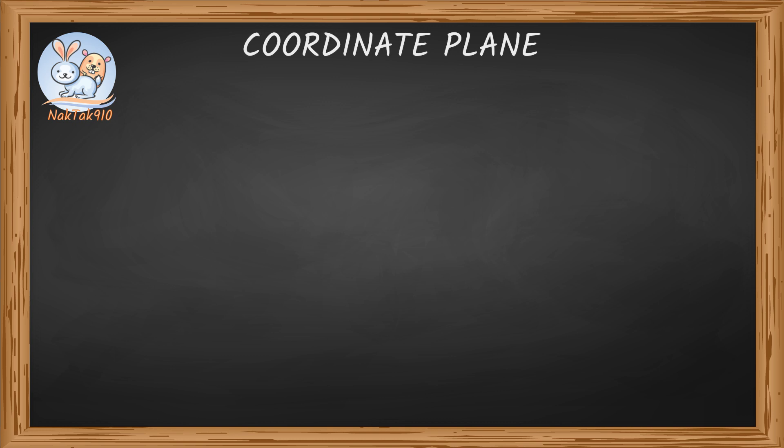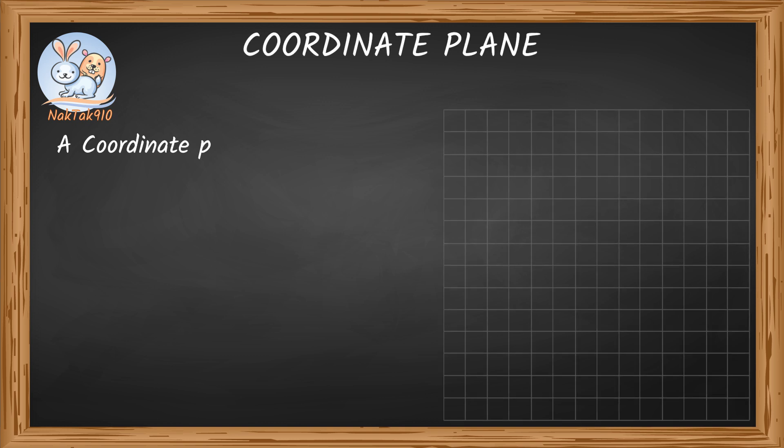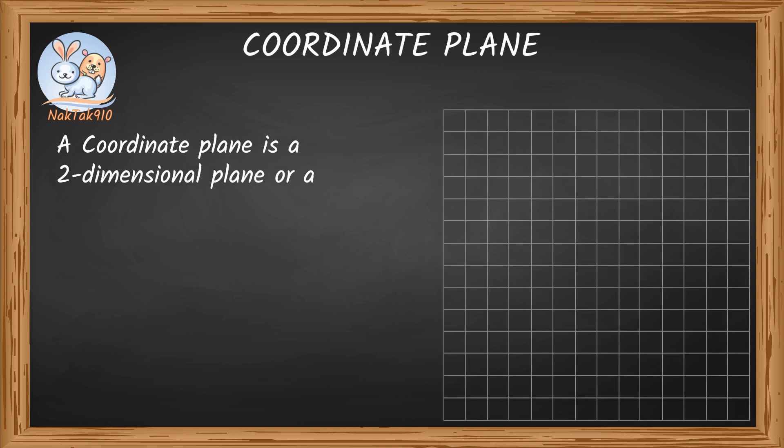Coordinate plane. What is a coordinate plane? A coordinate plane is a two-dimensional plane, or a surface formed by two number lines.